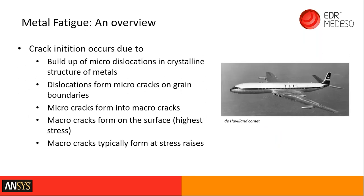Metal fatigue crack initiation occurs when we get a build-up of micro dislocations in the crystalline structure of metals. Under cyclic loading these dislocations increase — we call that damage — and they eventually move to the grain boundaries where they form micro cracks. When enough micro cracks accumulate they turn into a macro crack and we have crack initiation. Typically those cracks form on the surface, which is the area of high stress, often where there is a stress raiser.